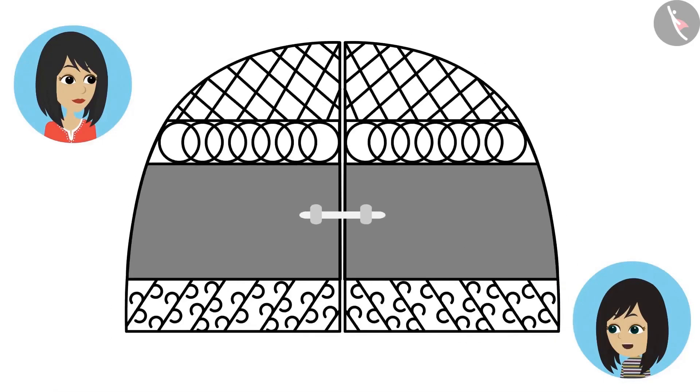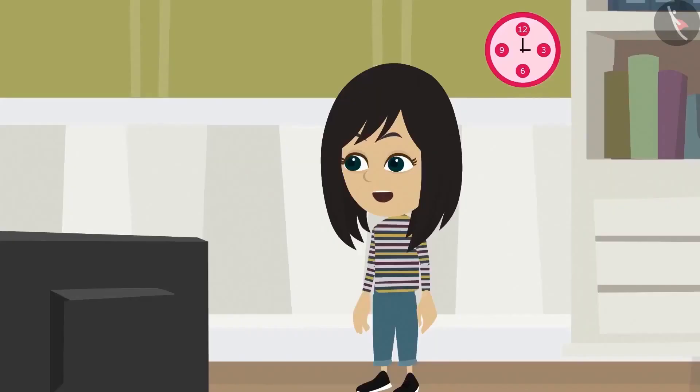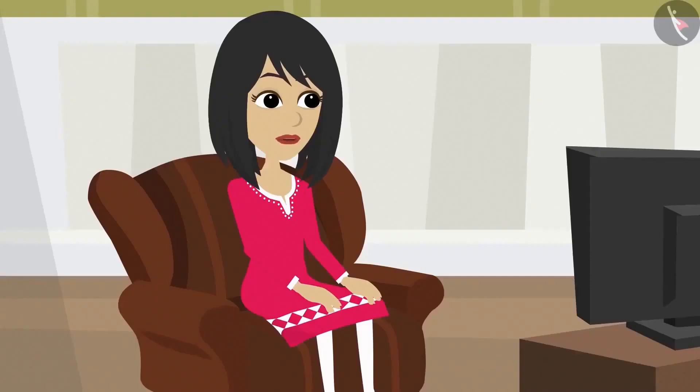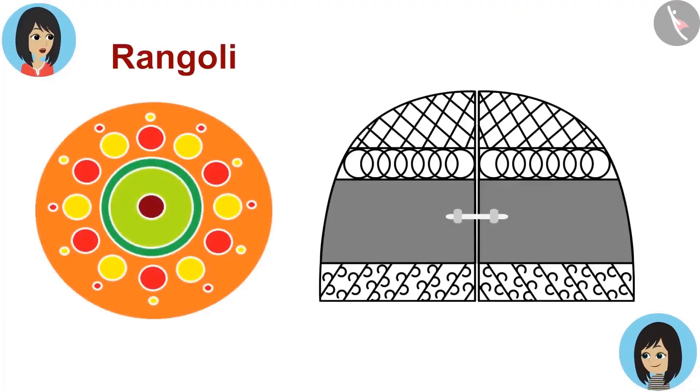Next is the design on the gate of our house. Yes, there are many rounds made on it. Not rounds, mommy. Say circles. In the language of math, round shapes are called circles. Okay. The gate has many circles too. But there is a difference in the design made on the gate and the design of the rangoli. Can you tell what is the difference?